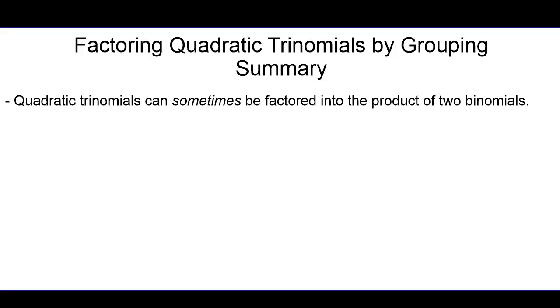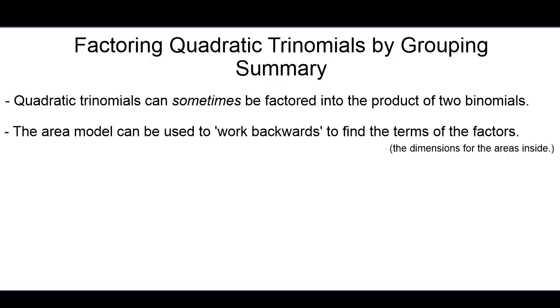So let's summarize what we've learned here today. First, quadratic trinomials can sometimes be factored into the product of two binomials, but not always like we saw in the last example. We've also seen that the area model can be used to work backwards to find those binomial factors. It's like finding the missing dimensions for the areas inside.